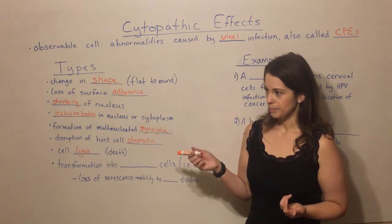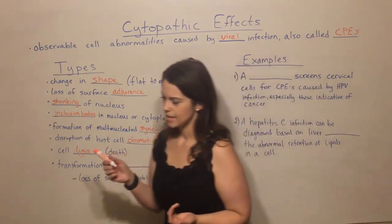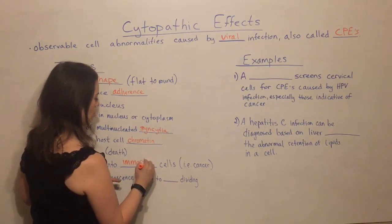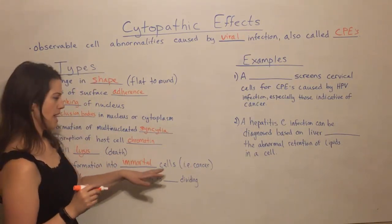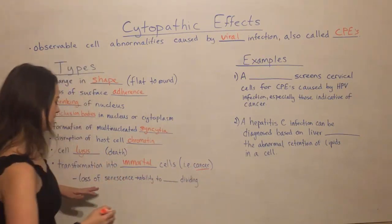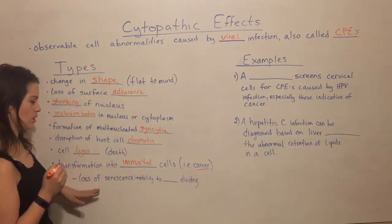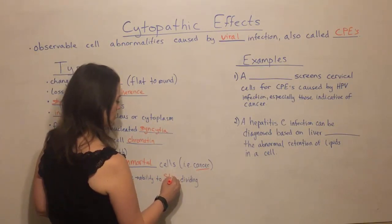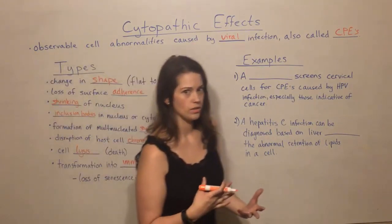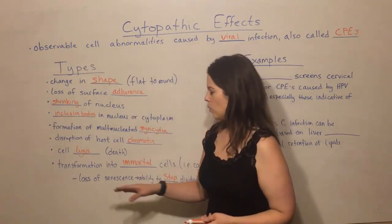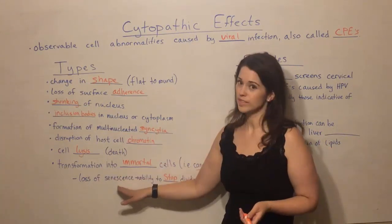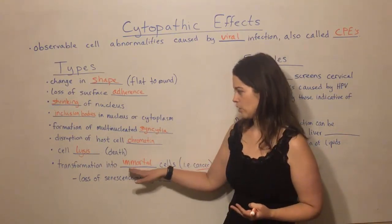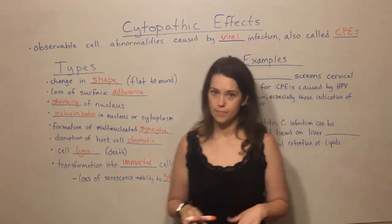Another type of CPE — probably the worst kind — is transformation of the host cell into an immortal cell. Immortal cells are another name for cancer. This is characterized by something called loss of senescence. Senescence is the ability to stop dividing, and we obviously want our cells not to divide uncontrollably. But when cells lose senescence, they can no longer stop dividing — they just start dividing out of control. We call them immortal cells, and this is what leads to cancerous tumors.